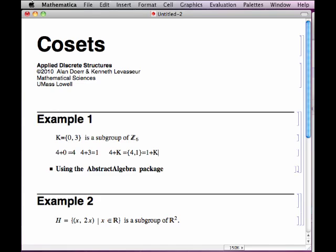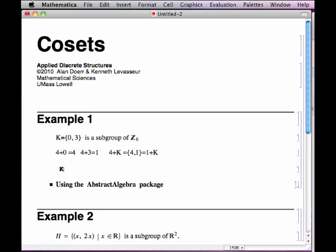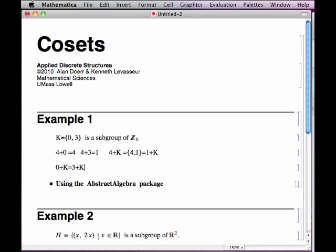The same cosets can be generated from different elements. Another important point to remember in all cases is that the subgroup itself, in this case it's K, K is a coset. Every subgroup is a coset because, in this case, if we take 0 plus K or 3 plus K, add 3 to all the elements in K, or 0 to all the elements in K, you get K back again.